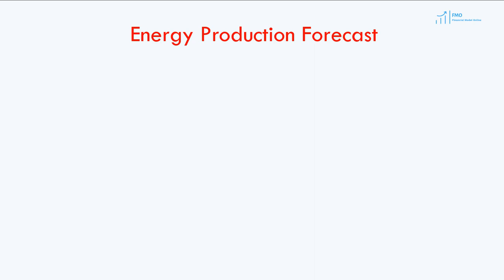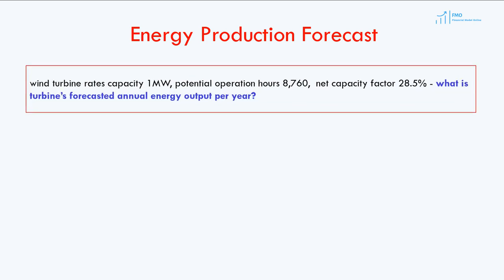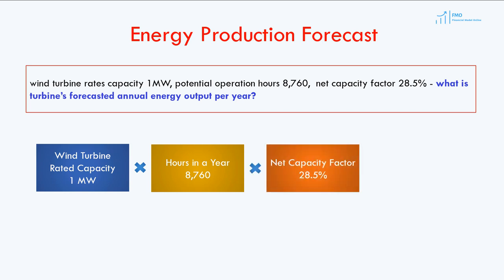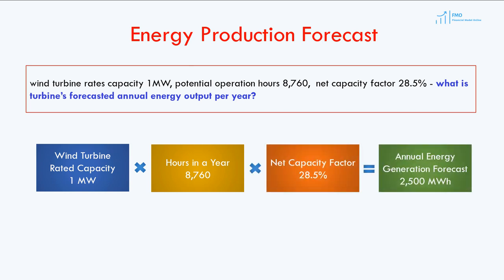If we know the net capacity factor for a wind turbine or solar panel and its rated capacity, we can forecast its energy output. Let's reverse our last example. Suppose we know its net capacity factor, which is 28.5%. To forecast its annual energy production, we would take the turbine's rated capacity of 1 megawatt, multiply it by the number of hours in a year and its net capacity factor, giving us annual energy production of 2,500 megawatt hours.